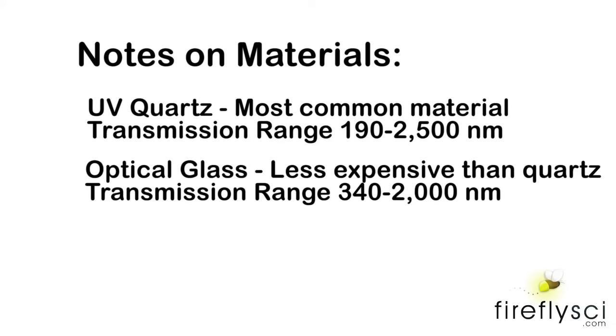The next most common material is optical glass. This material is a bit cheaper than quartz and has a transmission range of 340 to 2,000 nanometers. So you can save a little bit of money if you don't work in the UV range.